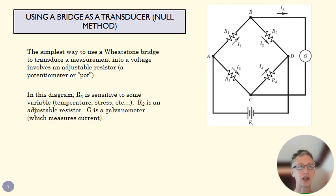If R1 is sensitive to, say, temperature or strain, then I would make R2 a potentiometer, that adjustable resistor which we call a pot a lot of times in circuit lingo if you're hanging out with your circuit friends. That's what the cool kids call it.